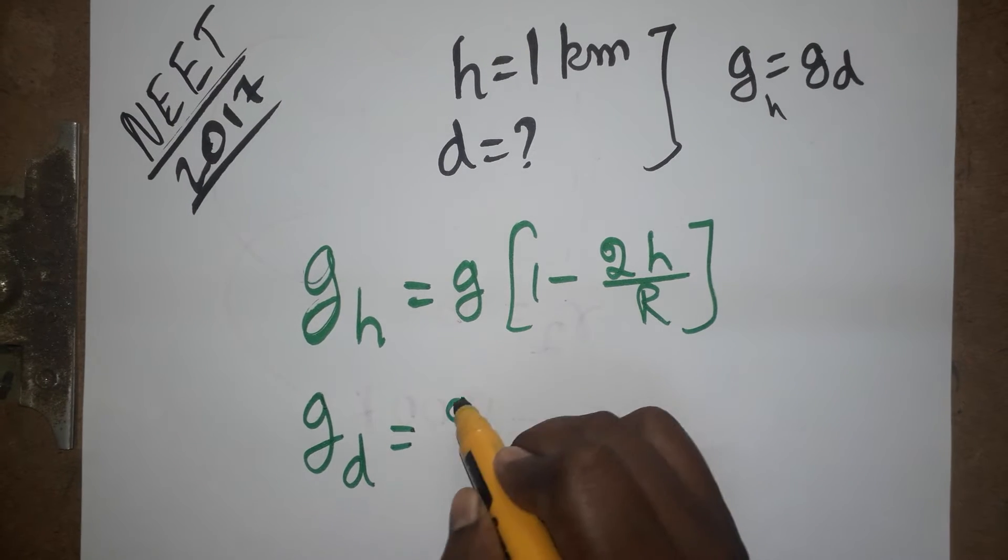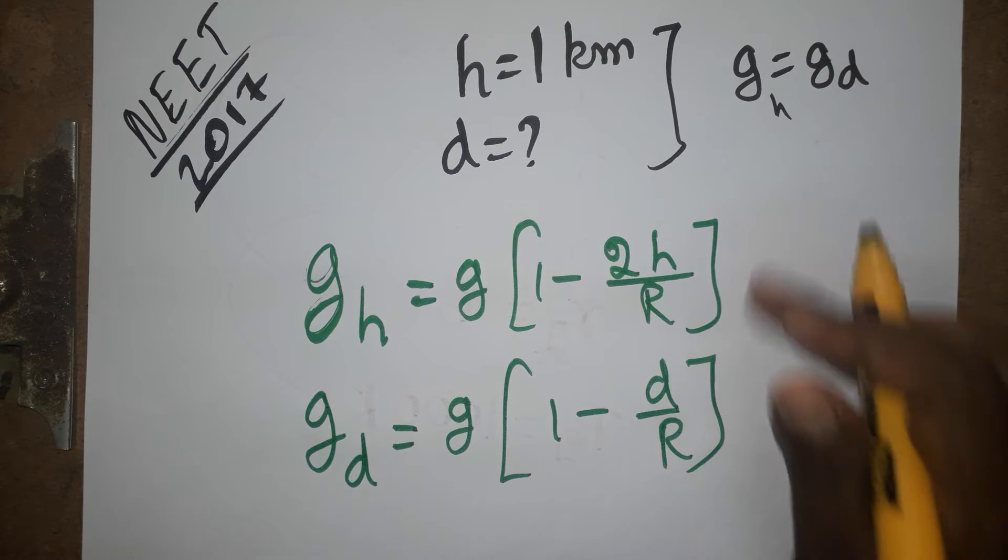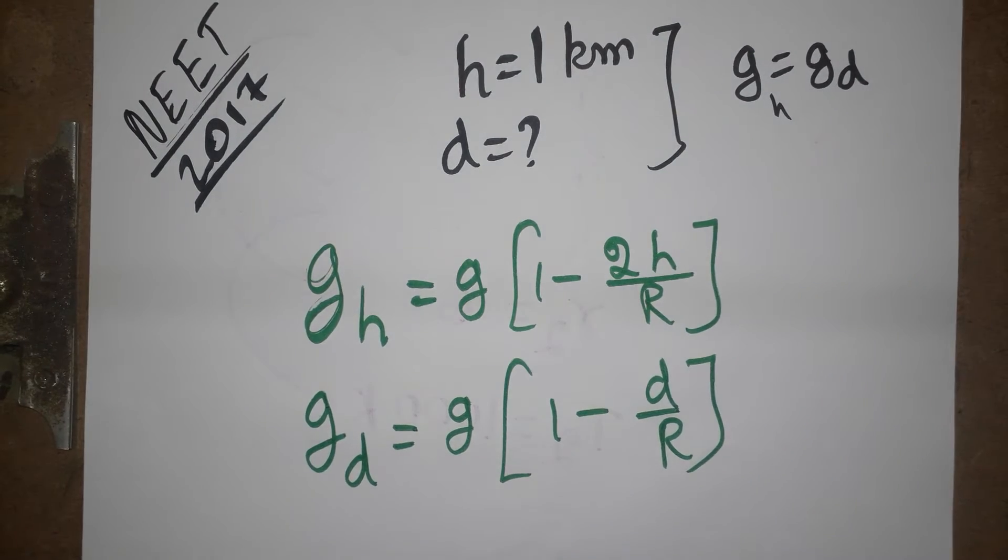Gravitation in depth: g times 1 minus d divided by R. Height and depth - this is what we can have the equation.